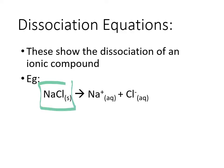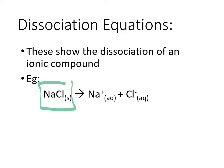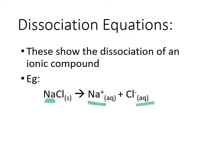When an ionic compound breaks apart, it starts as a solid crystal and becomes individual ions. We need to make sure the ratio is maintained. For sodium chloride, for every one sodium ion we get a free sodium ion that is hydrated — aqueous, surrounded by water — and we get a chloride ion that is also hydrated and surrounded by water.